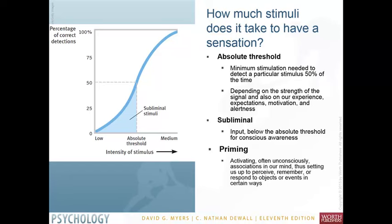How much stimuli that you sense can vary based on the person, based on alertness, physical limitations, but there is a minimum amount that is required before we as human beings can actually detect it. And what they call that is the absolute threshold — that's the minimum needed to detect a specific stimulus 50% of the time.